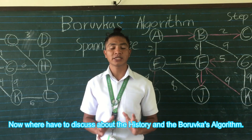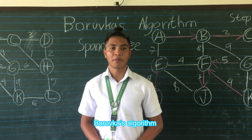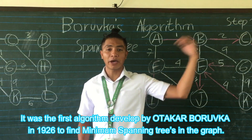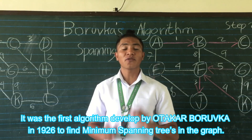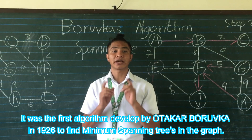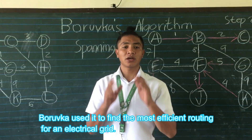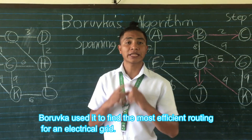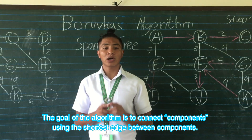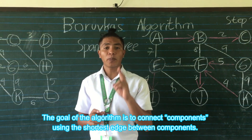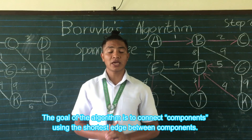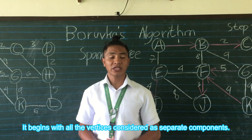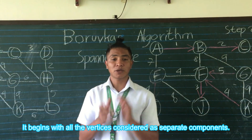Now we're discussing the history of Borůvka's Algorithm. Borůvka's Algorithm is the first algorithm developed by Otakar Borůvka in 1926 to find the minimum spanning tree in a graph. Borůvka's Algorithm was used to find the most efficient routing for an electrical grid. The goal of the algorithm is to connect components by the shortest edge between them. It begins with all the vertices considered as separate components.